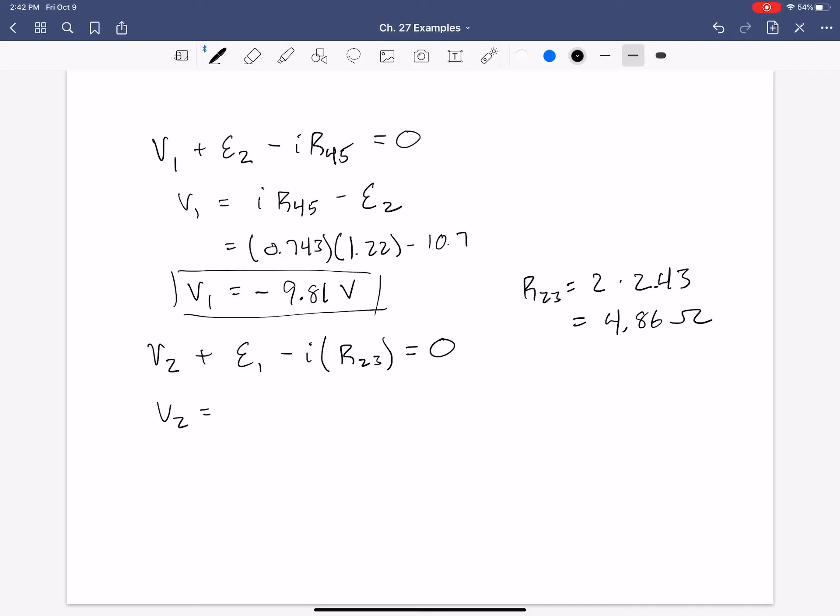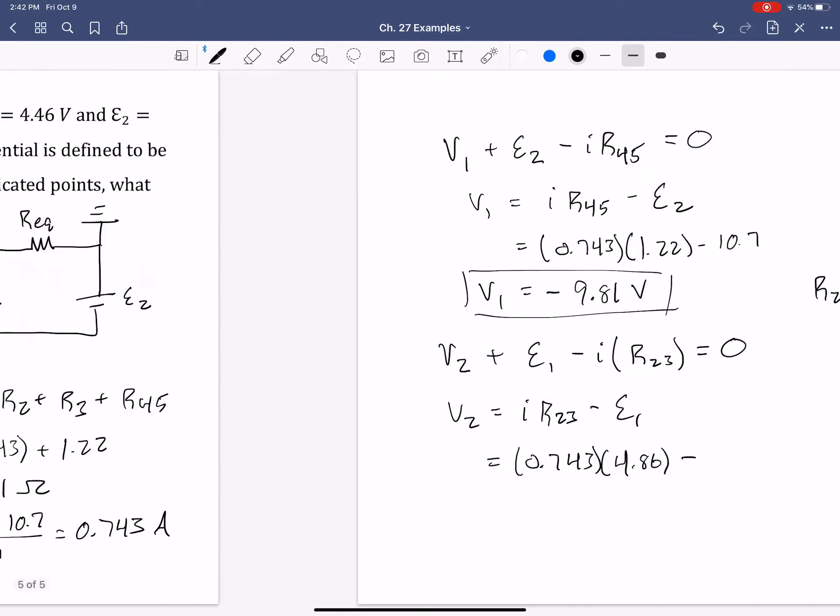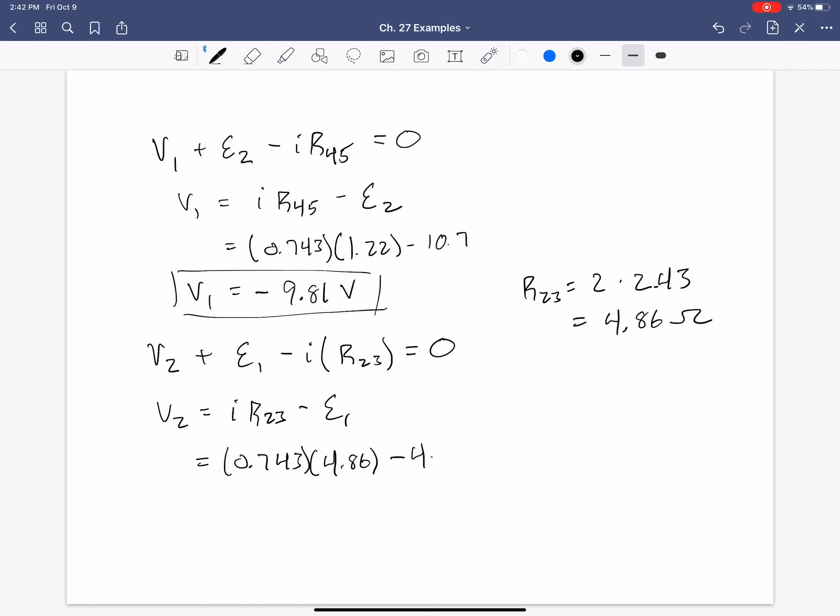Now, solving for V2, we have IR2,3 minus E1. Current value is still the same, minus 4.46. And now, I can't do that in my head, but it should be negative 8.03. Negative 8.03 volts for V2.